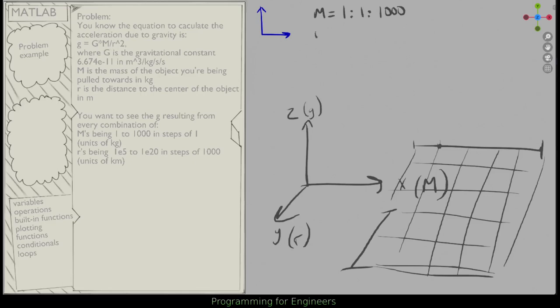My r is 1e5 to 1e20, but I want it in steps of 1000. Oh yeah, there we are, 1e20. But this is in kilometers, and the initial r is in meters, so I'll multiply by 1000 meters per kilometer, and then I'll get meters from here.